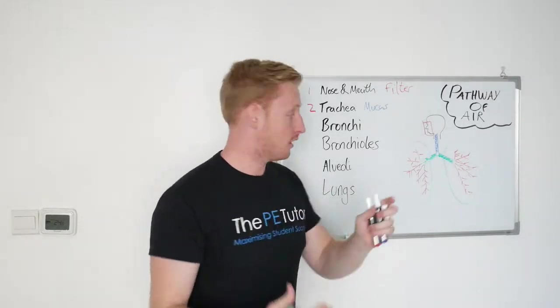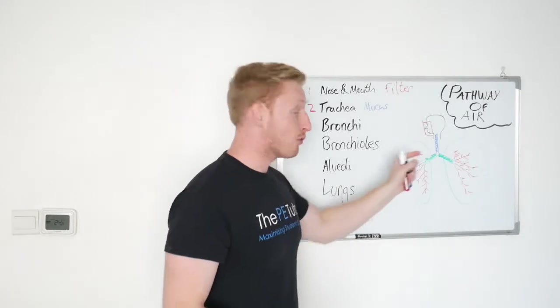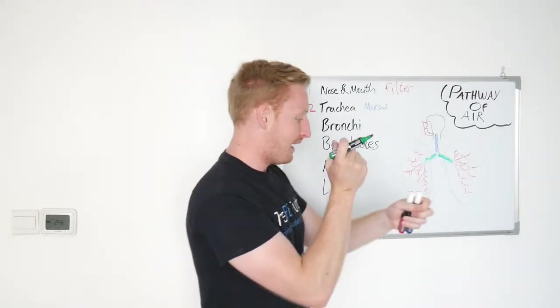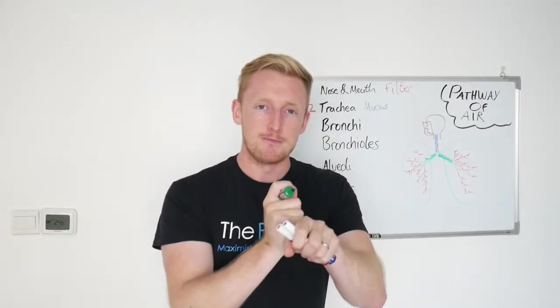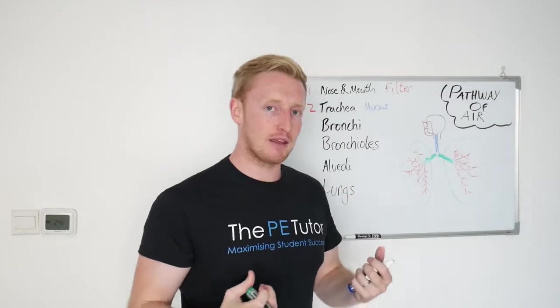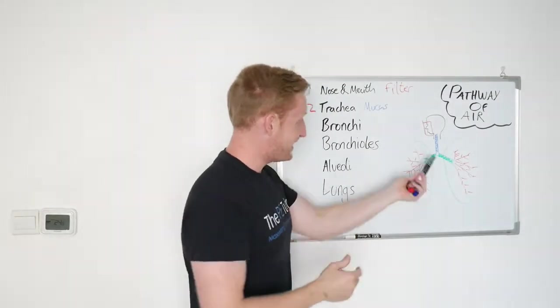The bronchi divide that passage of air up in two so that each lung gets an equal volume of air. A set of one is called bronchus; together we call them bronchi. They're also ringed with cartilage, so they are tougher and thicker and they're able to resist forces so that they don't collapse and the air can make it through them.